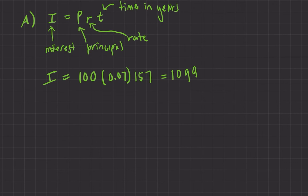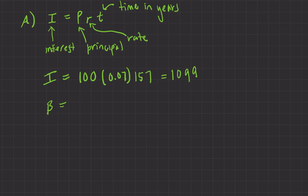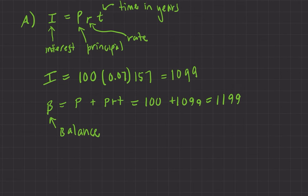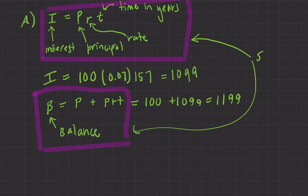You're adding $7, 157 times, and that's not so exciting. We can also introduce a balance variable B. Your balance will be that interest you earned plus your principal — so B equals P plus PRT. In our case, we start with $100 and then add $1,099, giving us $1,199. This is our interest formula and balance formula for simple interest.